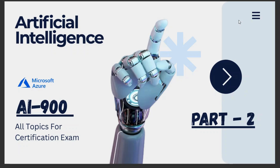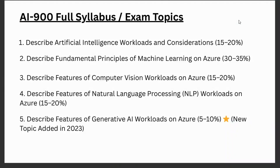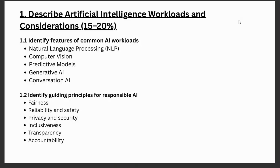Hello everyone, welcome back to the AI-900 course series. In the last video we understood what artificial intelligence is and why this certification is important. In this video I will give you a complete overview of all the topics we are going to cover in this course. This will help you understand the syllabus clearly and plan your preparation step by step. Basically, the whole course is divided into five modules.